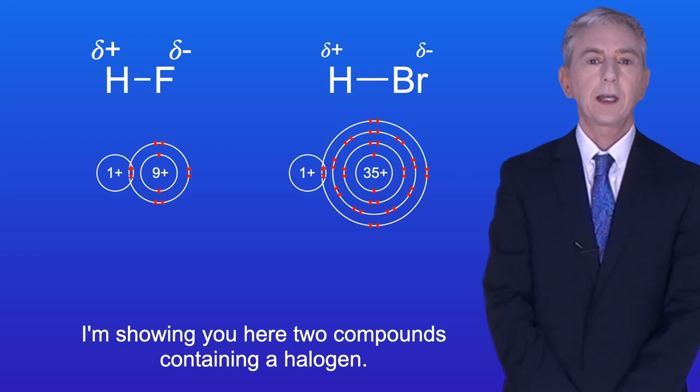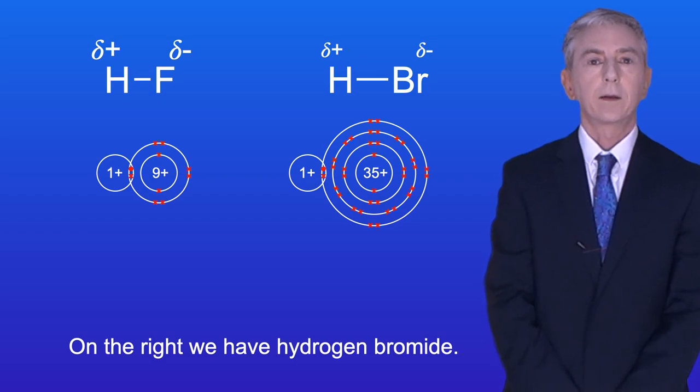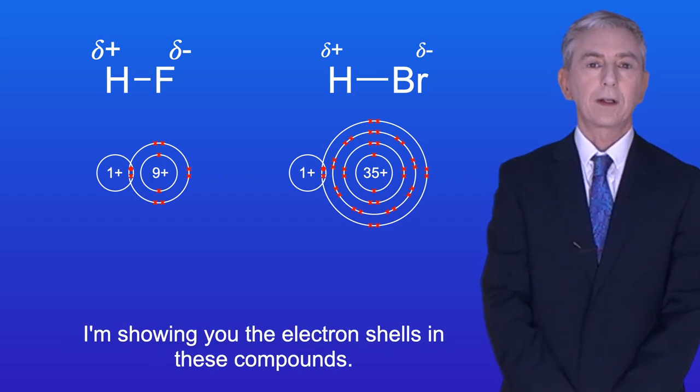I'm showing you here two compounds containing a halogen. On the left, we have hydrogen fluoride, and on the right, we have hydrogen bromide, and I'm showing you the electron shells in these compounds.